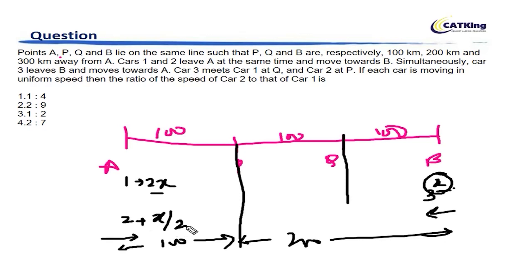It's a very simple application of time-speed-distance wherein if time is a constant, your speed is directly proportional to distance. So the speed of car 2 will be X by 2. Now the question is ratio of speed of car 2 to that of car 1. So car 2 is X by 2 and car 1 is 2X, so the ratio is 1 is to 4. So the first option is the correct answer option for this case.